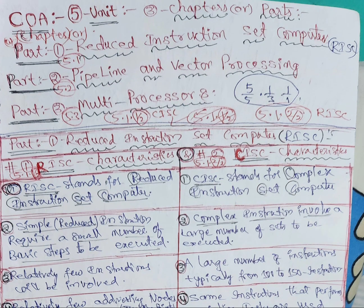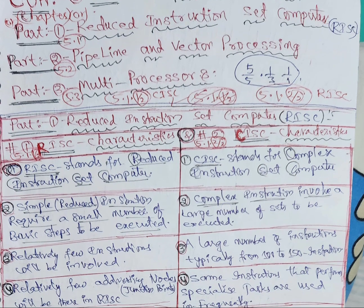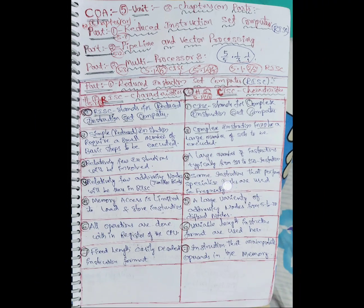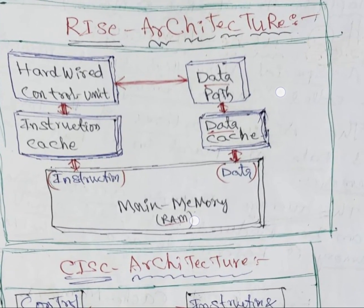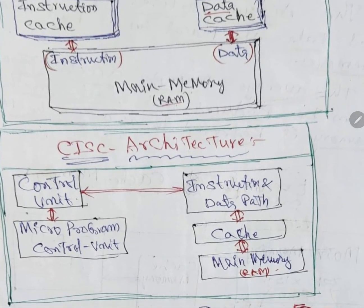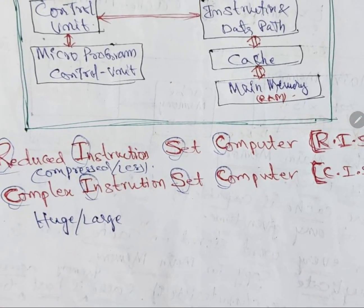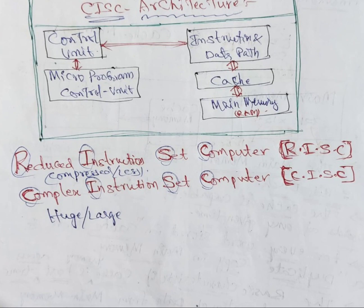In the fifth unit, we have three chapters. The first one is CISC, second one is pipeline and vector processing, and third one is multiprocessor. The first chapter question is this one, already covered. Now we are going to see the architecture part. This is RISC, so you may get this in a short answer question also. In a short answer question, you may be asked: what is RISC? Explain about it — meaning you need to write the full form.